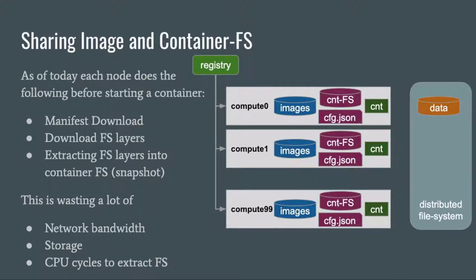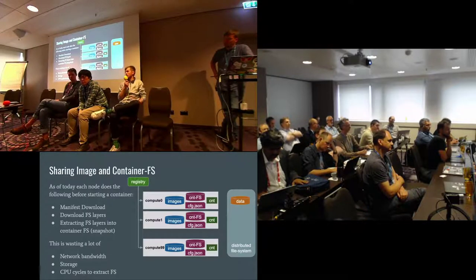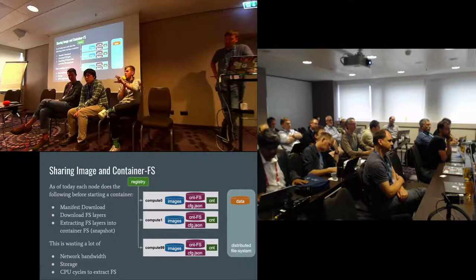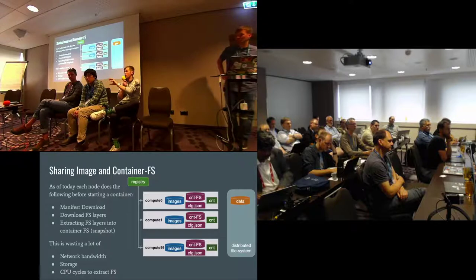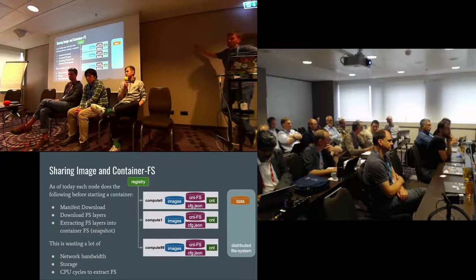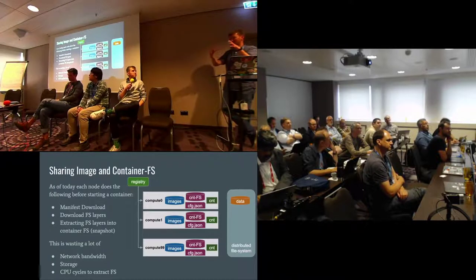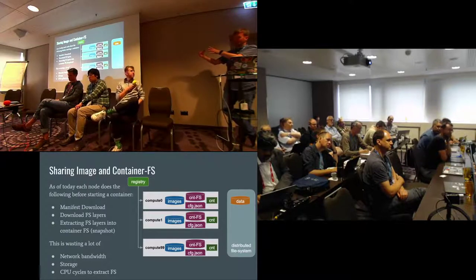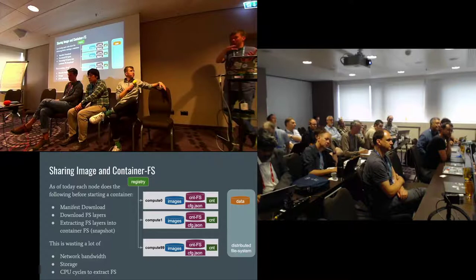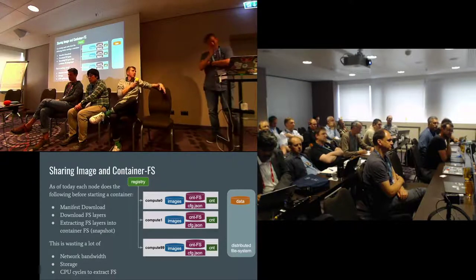That's also why Singularity supports the OCI image format — a lot of people are using it already and it has those benefits. One way to think about it is the difference between source code and a compiled binary: the Singularity image format is analogous to the compiled binary version of the container that's portable. The OCI image is kind of a mixed bag because it's compiled at the end when you start it, but you still have the sharing between different container images and it's a bit more optimized for that.